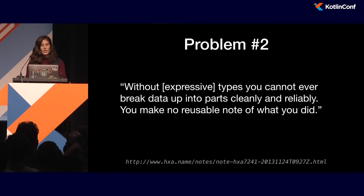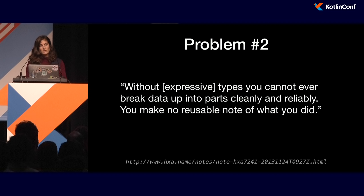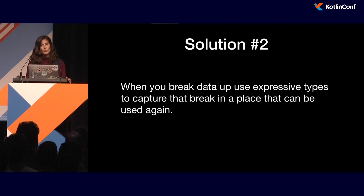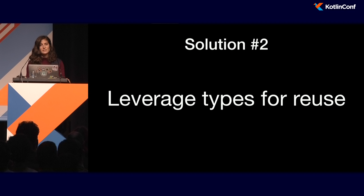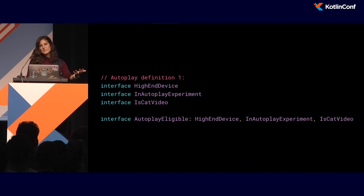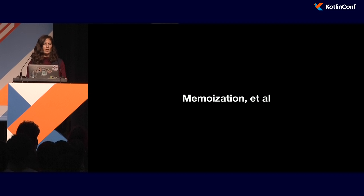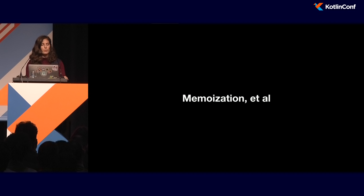And this leads to the second problem statement: without expressive types, you can't capture the work that you're doing. So what is the solution? When you break up chunks of work, make sure to capture them in a way that you can recover. The TL;DR is: make use of your type system to be reusable. I use interfaces as an example because it was easy, but it's not the only way. There's a whole class of problems in the memoization arena where you can have proof of work or something else you've calculated that you're building upon, so you don't have to do every branch or every node in a tree.